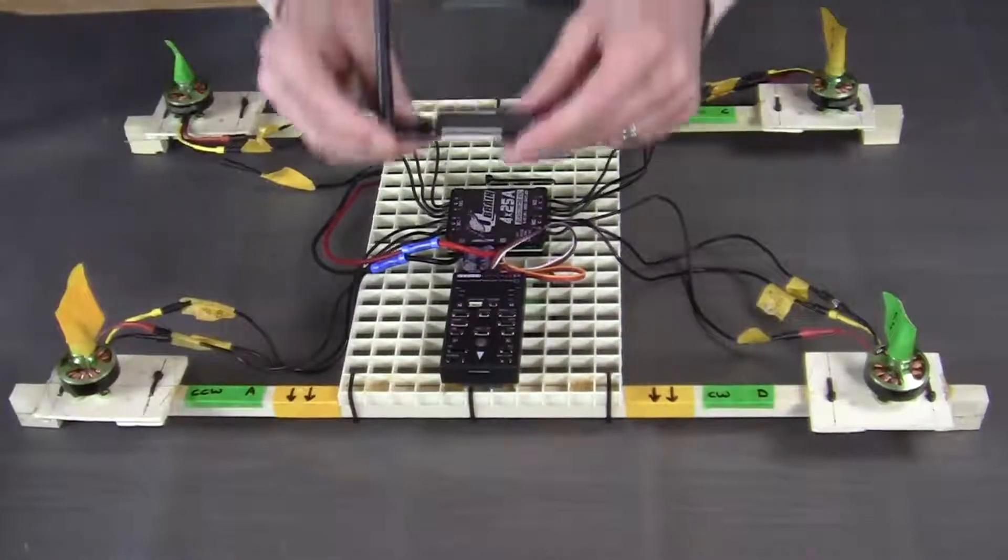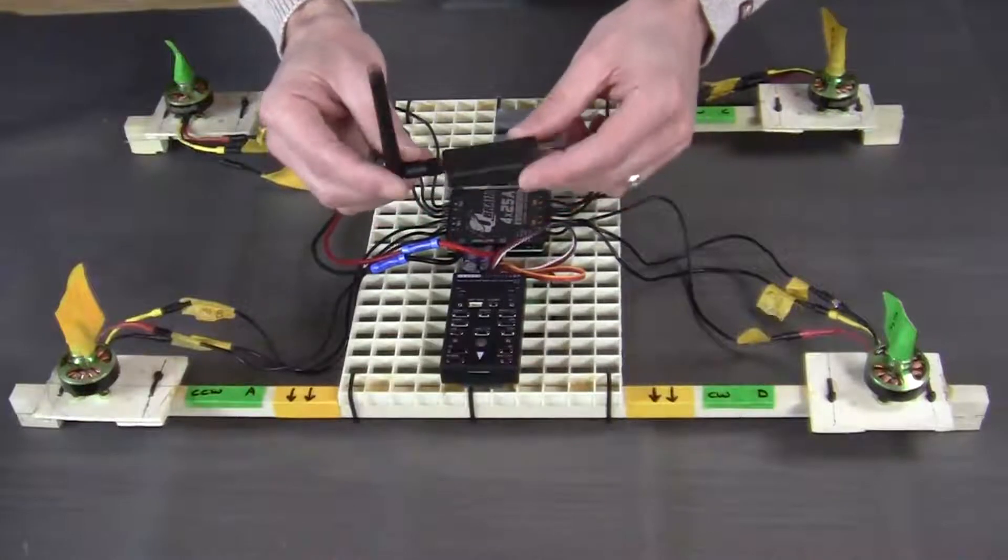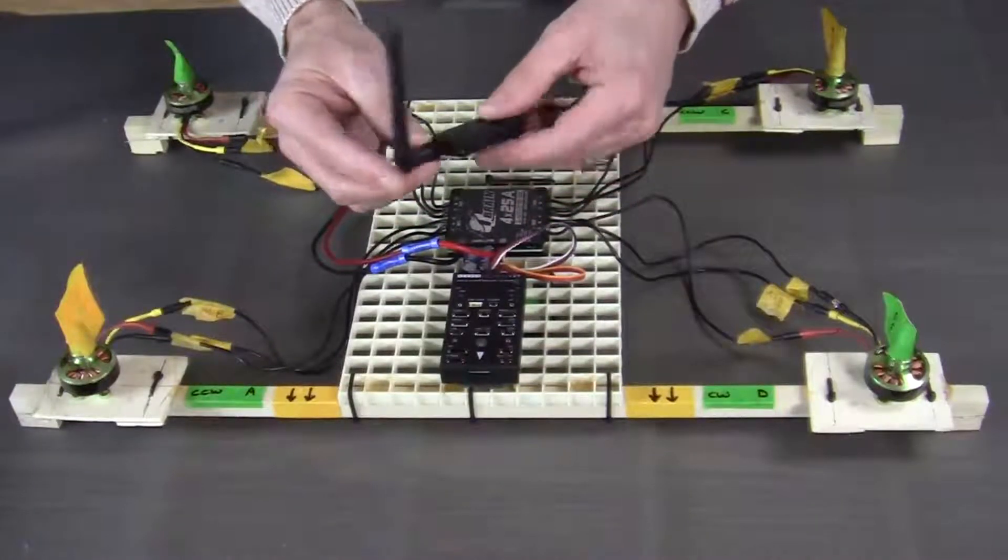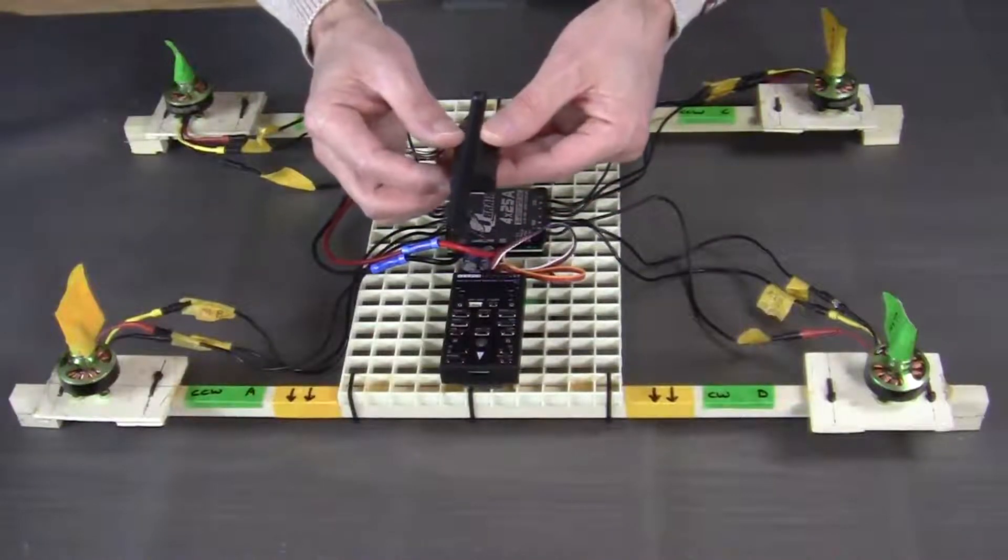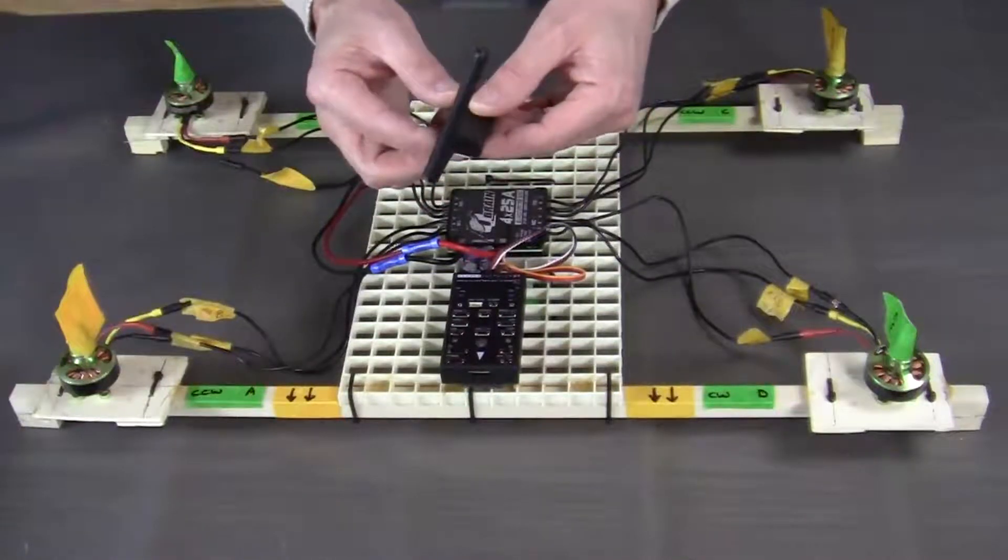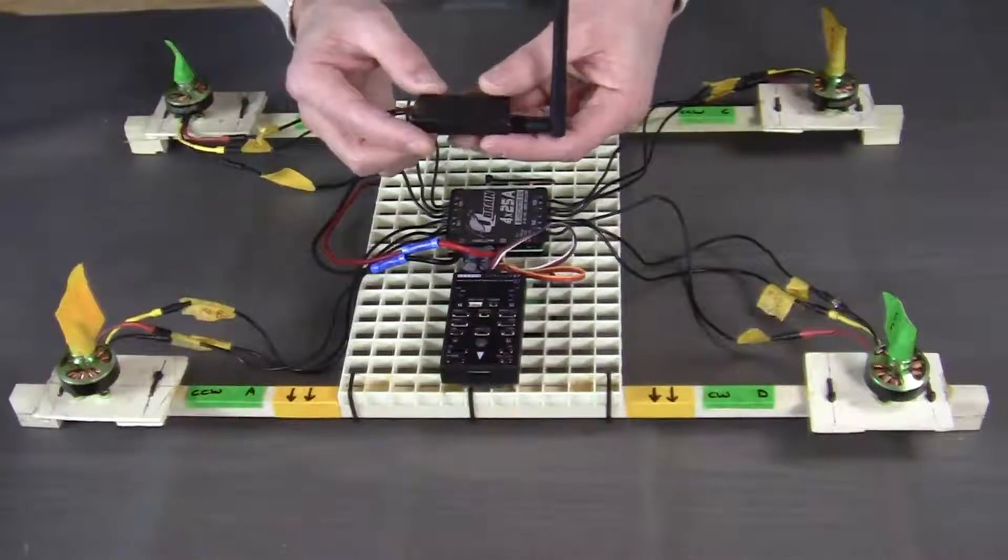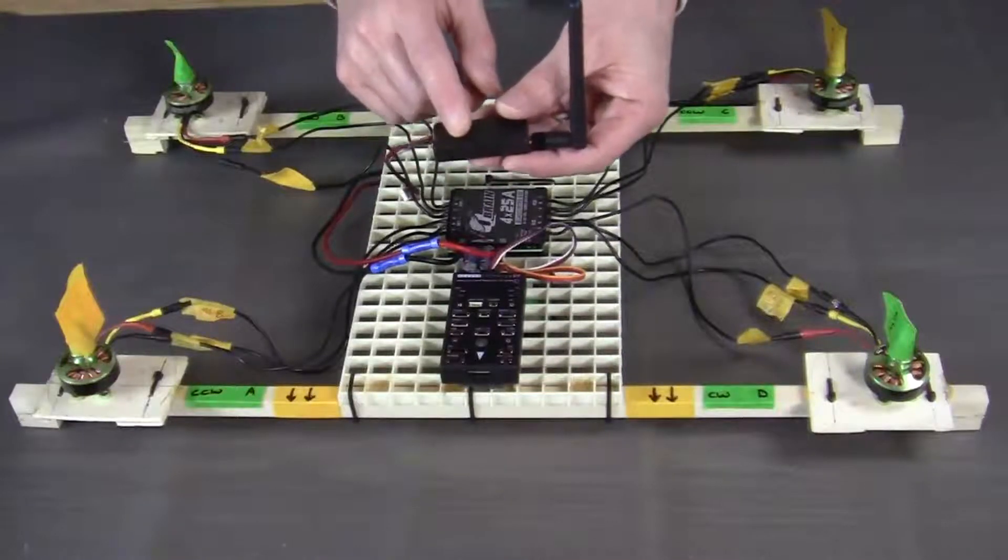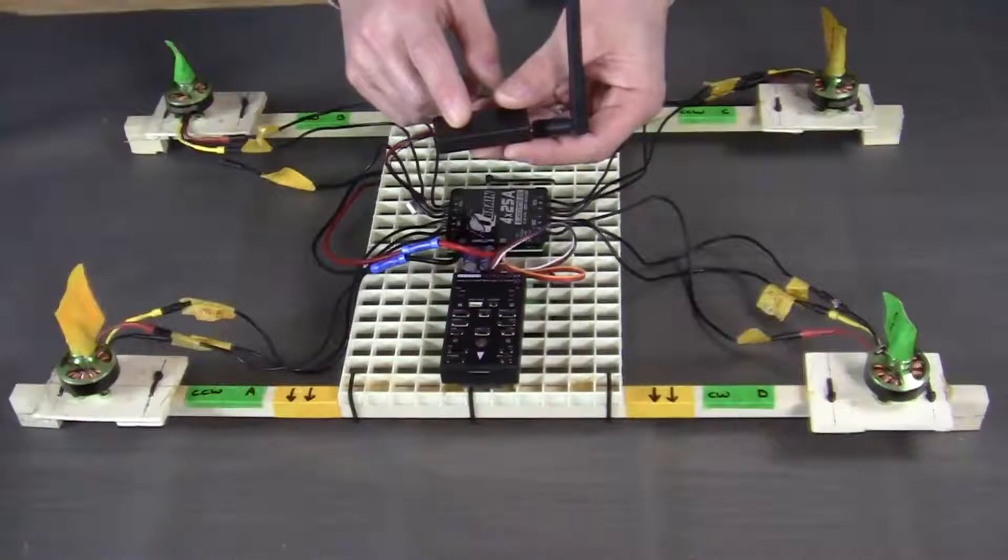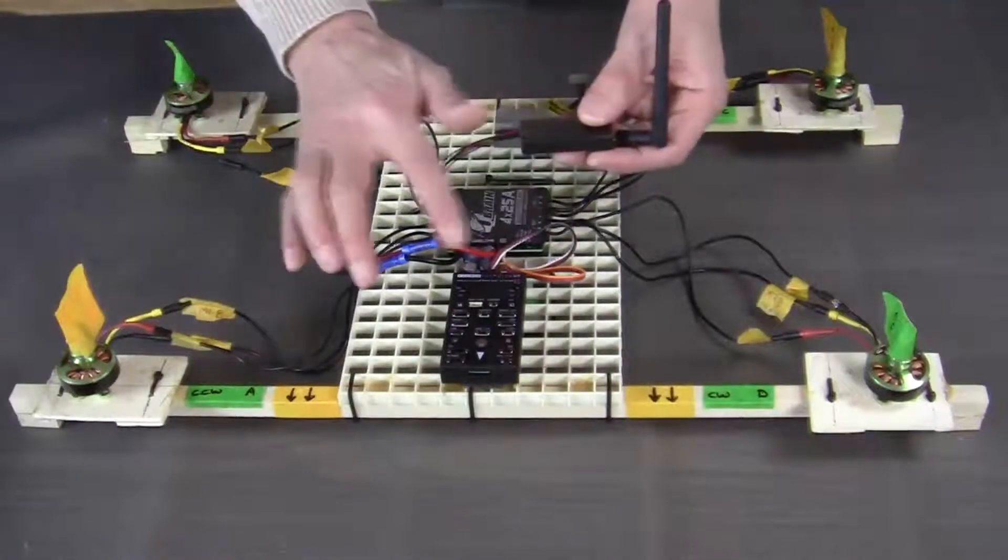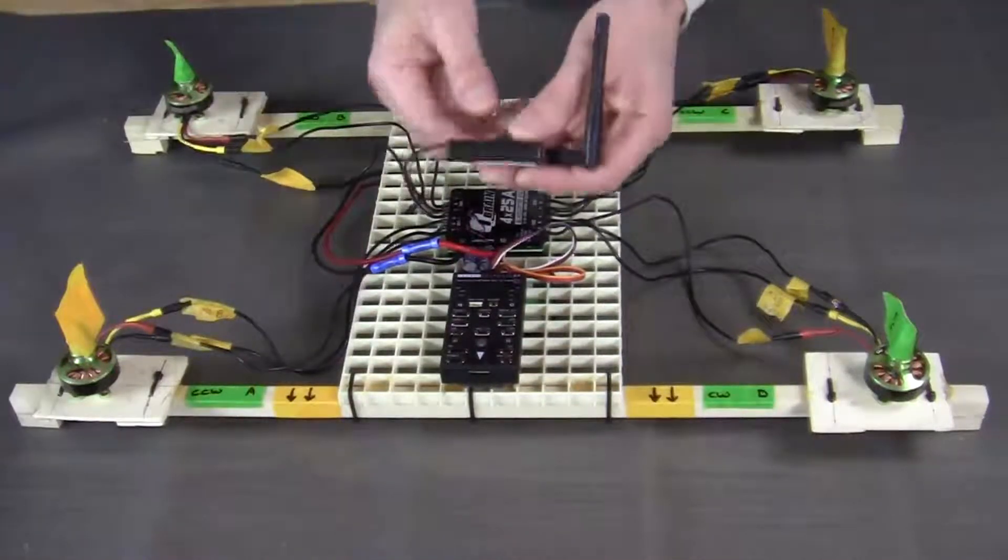The first component that we're going to connect is the telemetry module, and this device is what will enable the quadcopter to communicate to the ground station later on. When you order this module, you're going to get two of these and it doesn't matter which one that you choose to connect to the PixHawk or to the laptop.